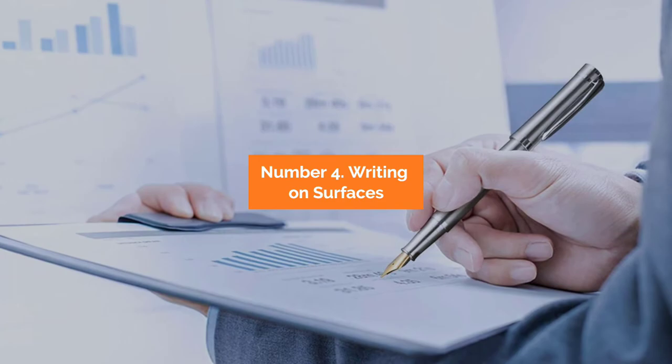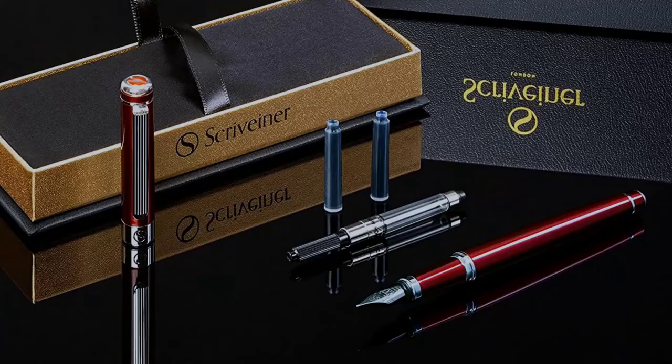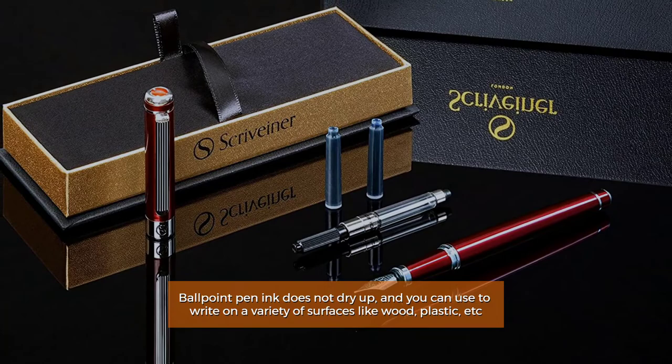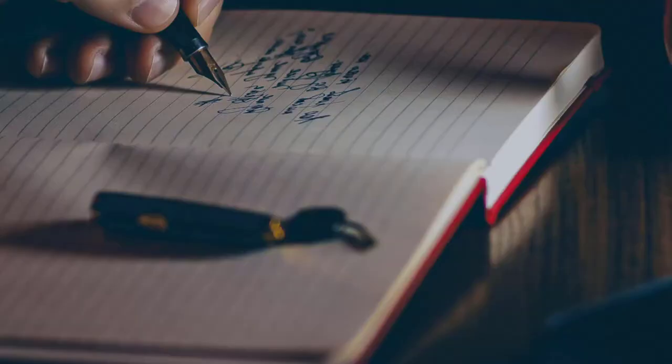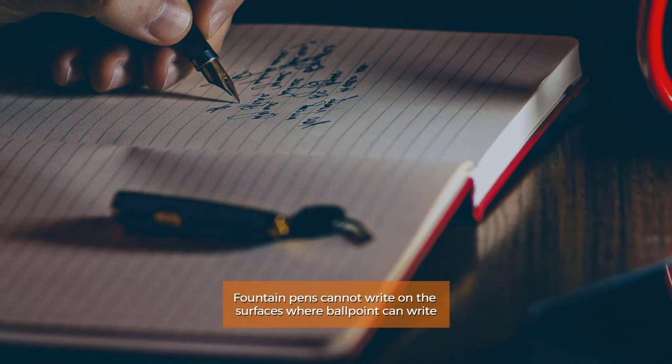Number 4: Writing on surfaces. Ballpoint pen ink does not dry up and you can use it to write on a variety of surfaces like wood, plastic, etc. Fountain pens cannot write on the surfaces where ballpoint pens can write.